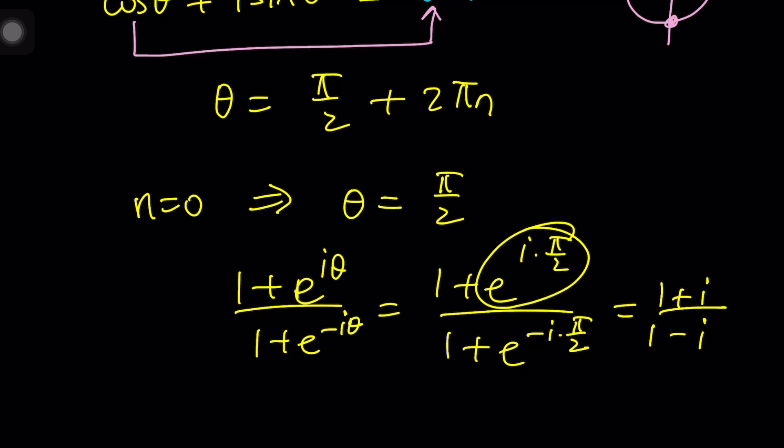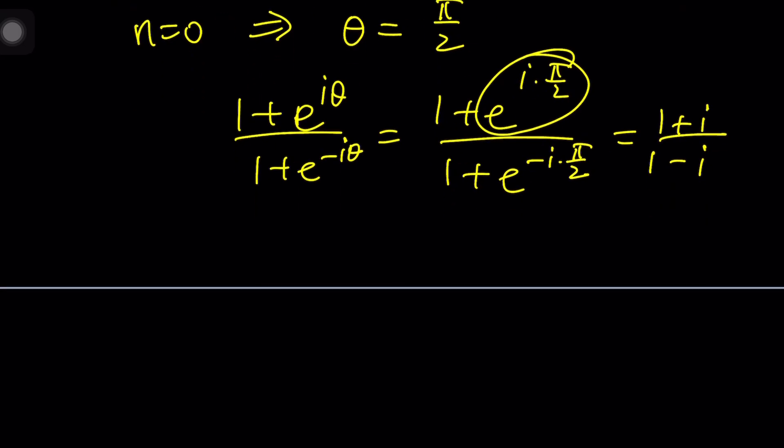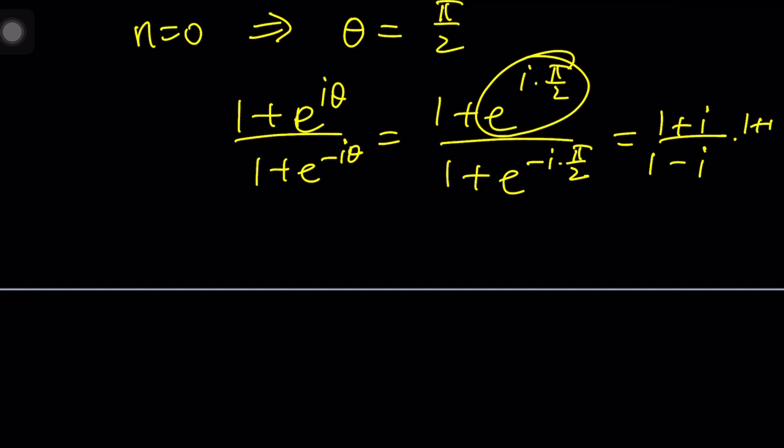And then, wait a minute. Aren't we supposed to get something from here? Okay, here's the thing. We're supposed to get an i from here. Well, let's multiply by 1 plus i and 1 plus i. The conjugate, the numerator becomes 2i if you square this. And the denominator becomes 2, which gives us i. So, yes, our solution checks. That's what we were trying to do.